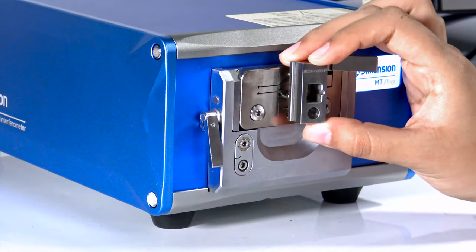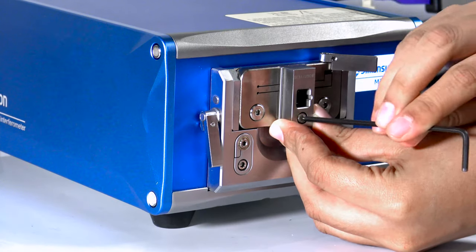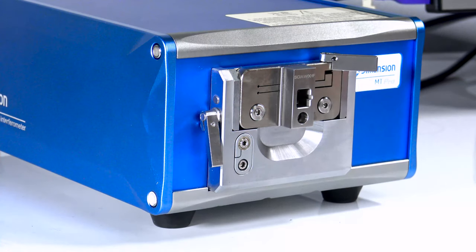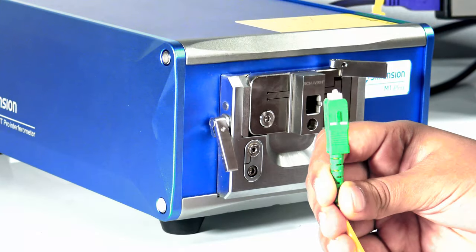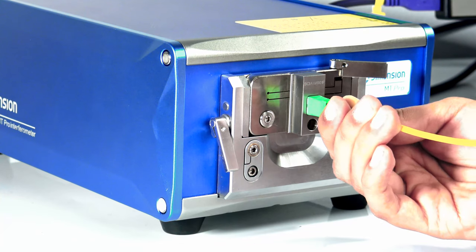At the end of the calibration, place the SIAW001F adapter in the frame that is being used. Insert the APC connector that you want to inspect and secure it.